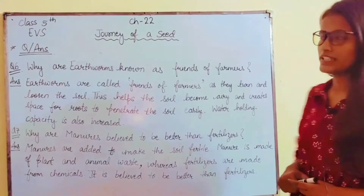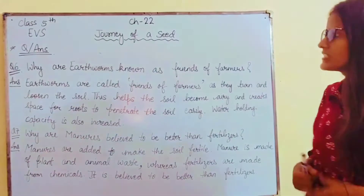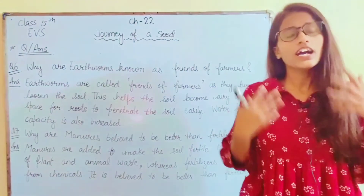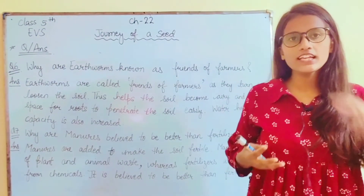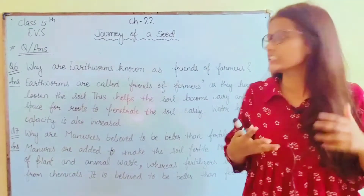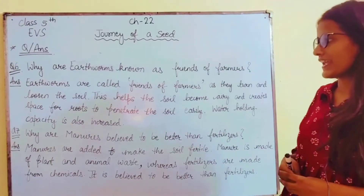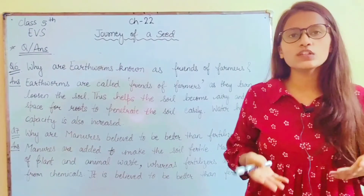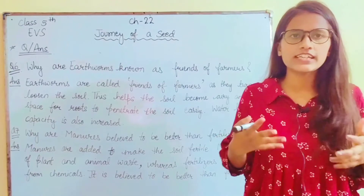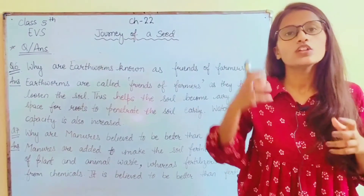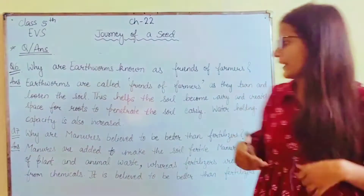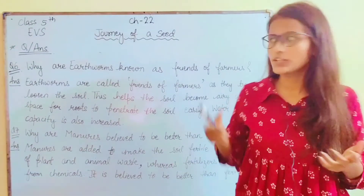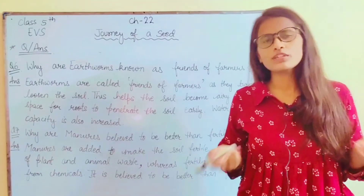Earthworms are called friends of farmers as they turn and loosen the soil. Earthworms ko friends of farmers isliye kehte hai kyunki wo soil ko loosen up karte hai aur usko turn karte hai. This helps the soil become airy and creates space for roots to penetrate the soil easily. Water holding capacity is also increased. That is why the earthworm is known as the friend of farmers.